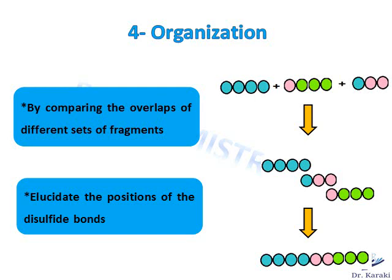Then we need to locate the position of the disulfide bonds. To do that, we repeat all the previous steps using the same enzymes but without using an SS reducing agent. In this way we keep the disulfide bridges intact. We then separate the fragments obtained and compare the fragments obtained with and without the SS bonds to determine the position of the disulfide bridges.